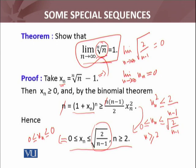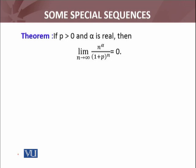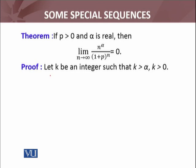We have another important sequence to discuss. We have a theorem: if p > 0 and α is any real number, then the limit of the sequence whose nth term is n^α / (1+p)^n equals 0. Proof starts with: let k be an integer such that k > α and k > 0.